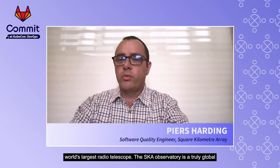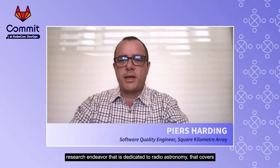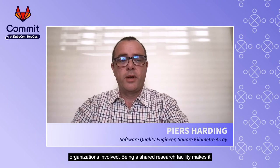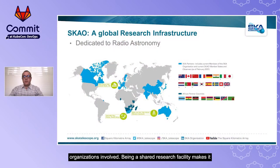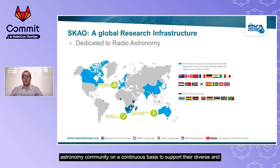The SKAO Observatory is a truly global research endeavour dedicated to radio astronomy. It covers three continents, 20 time zones and 14 member countries with over 100 organisations involved. Being a shared research facility makes it somewhat analogous to a factory that generates data for the radio astronomy community on a continuous basis to support their diverse and extraordinary scientific endeavours.